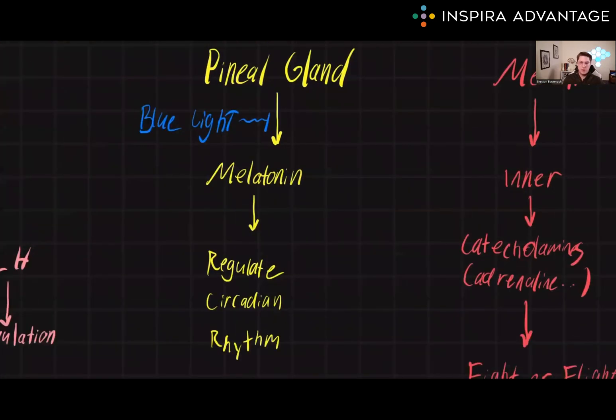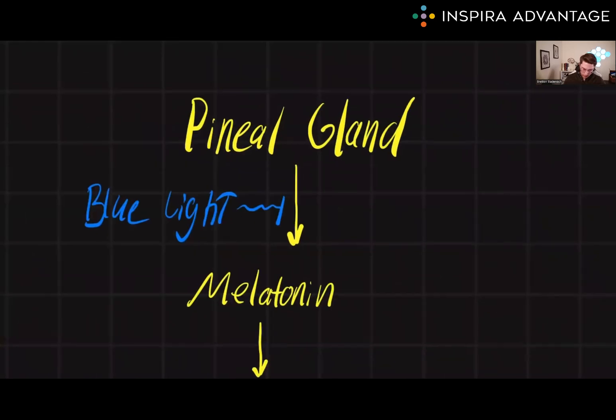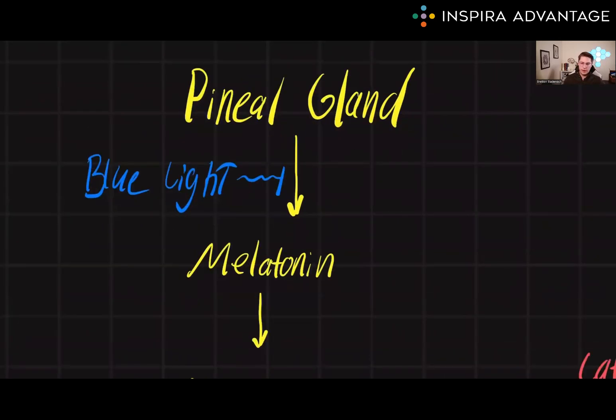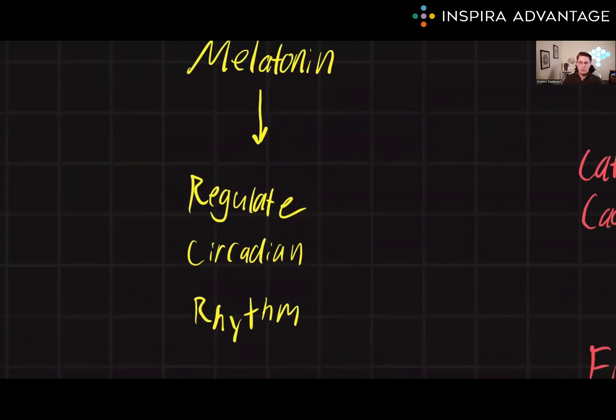Next up, we have the pineal gland. The pineal gland is a small endocrine organ located in the brain. Its main role is to produce melatonin. Melatonin is responsible for regulating the sleep-wake cycle, or the circadian rhythm. This is our internal biological clock that tells us when to wake up and when to go to bed.